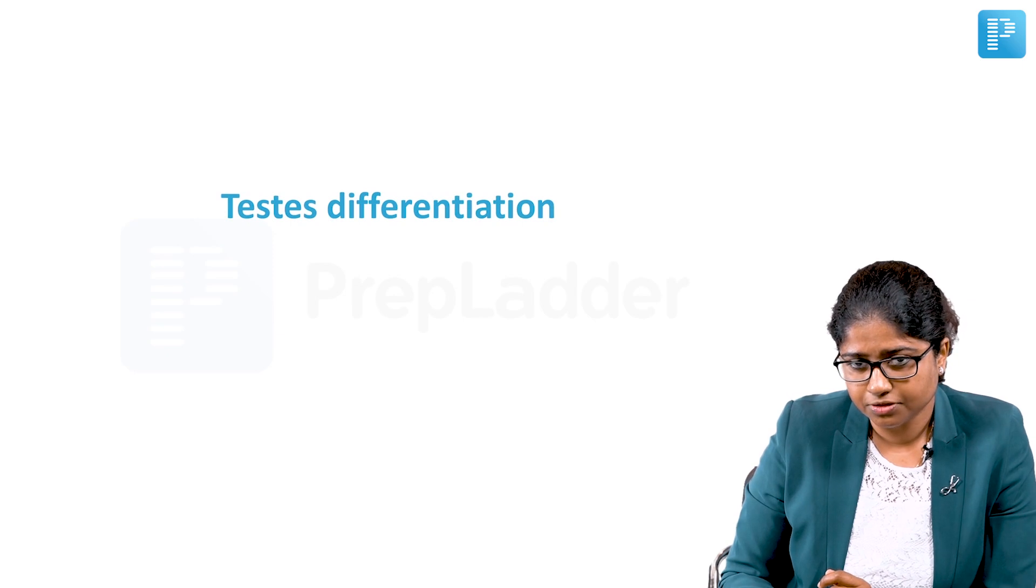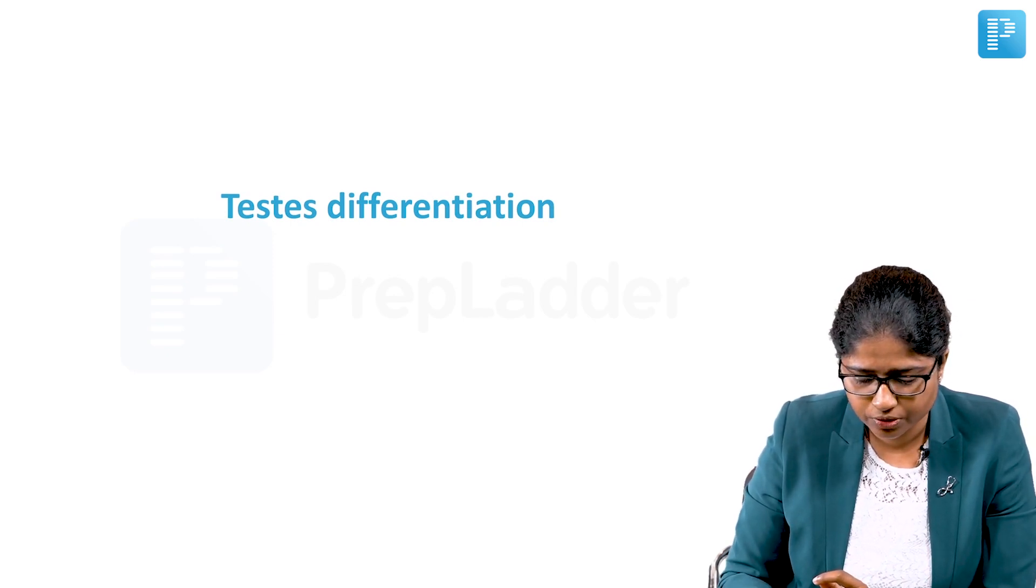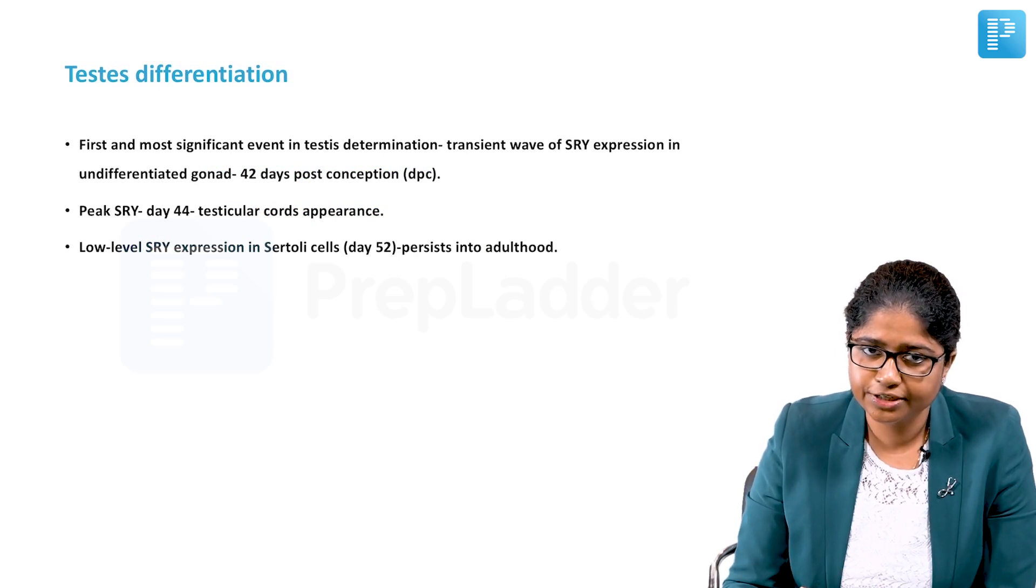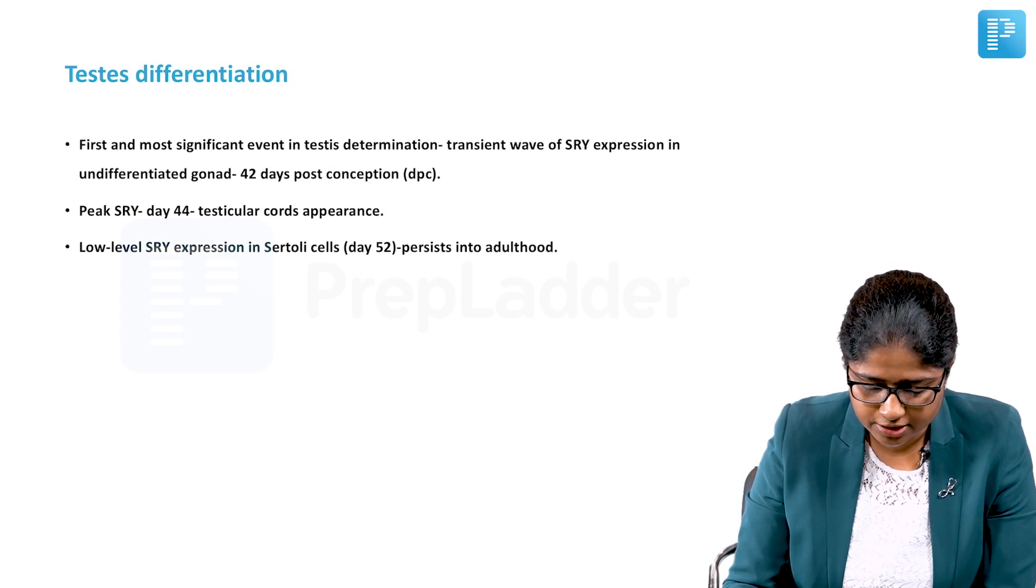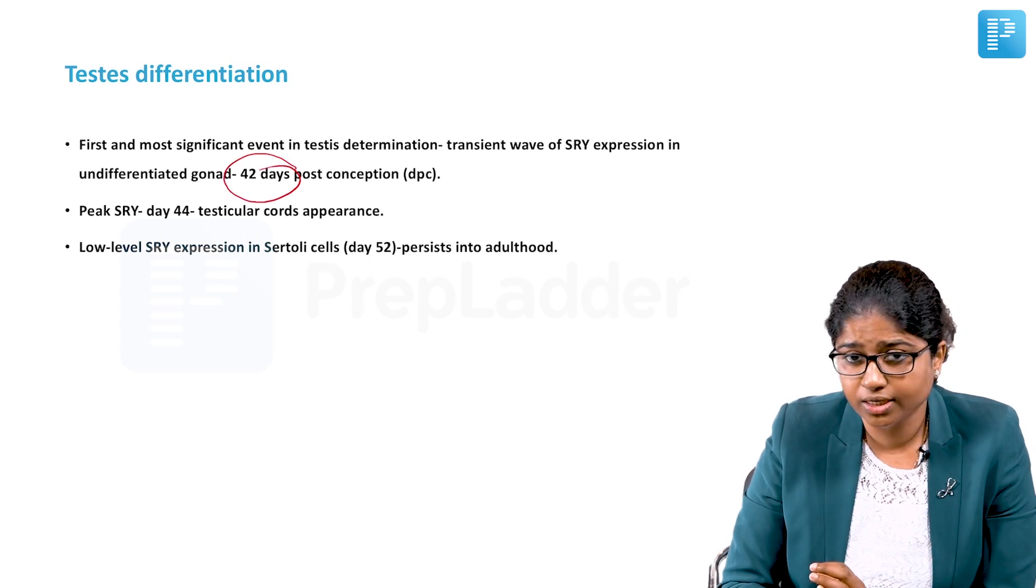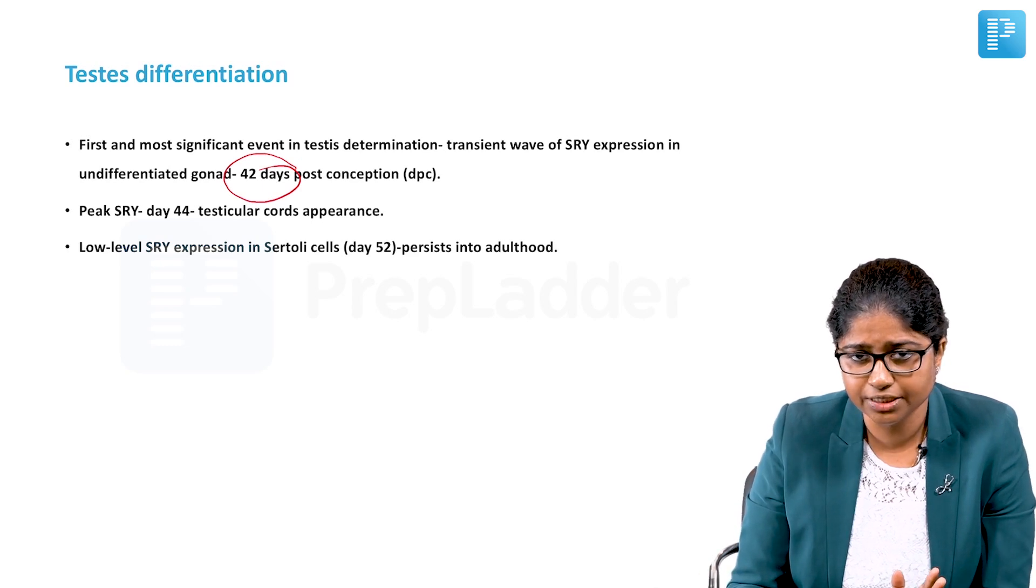First we will talk about testis differentiation because it has a lot of important factors and questions that could come up. The first and most significant event in testis determination happens at 42 days post conception. 42 is that number beyond which the gonad does not remain bipotential and it takes one of the two turns, either into the testis or the ovary.